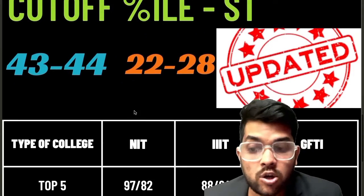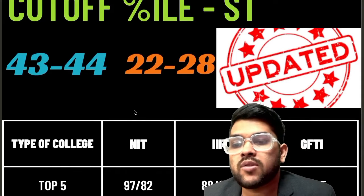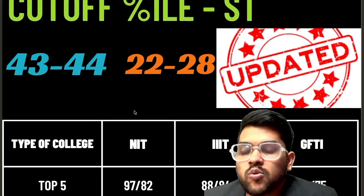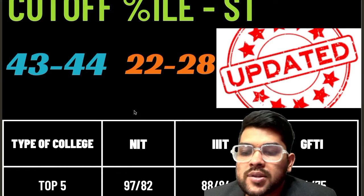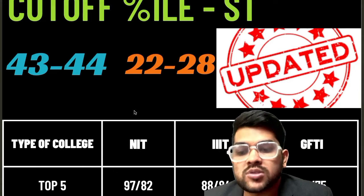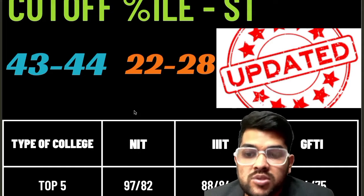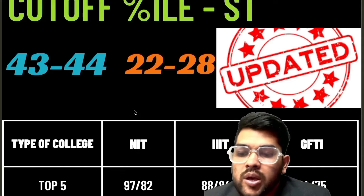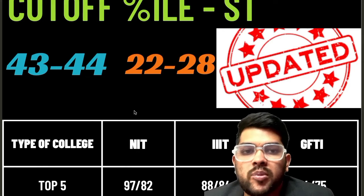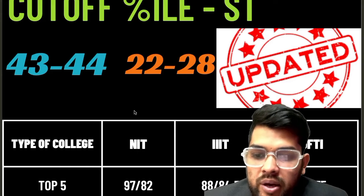Now for the NIT, IIIT, and GFTI cutoffs: for top 5 NITs, the cutoff is 97 percentile for CSE and 82 percentile for lower branches. CSE means the branch listed before the slash, and lower branch means any branch — just to enter a top 5 NIT. For top 5 Triple ITs, the cutoff is 88 and 84.5 percentile; for GFTI, 84 and 75 percentile.